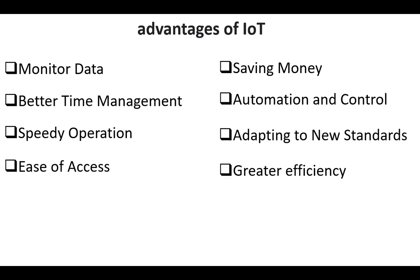Although the explanation of these advantages is obvious, I'll go through them quickly. First, monitor data. The primary and main advantage of IoT is monitoring. It helps us to monitor and to know the precise quantities of the control tanks. It can also provide more data that could not have previously been possible to collect easily.